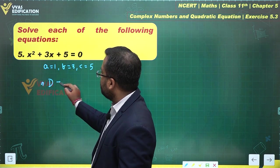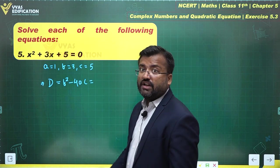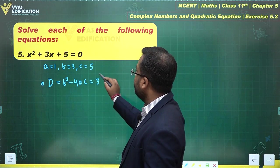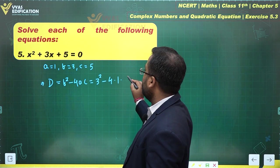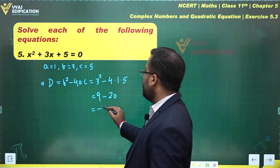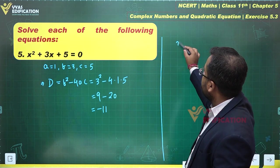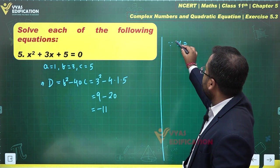Applying D equals b square minus 4ac, the discriminant equals what? Discriminant is b squared minus 4 times a times c. What is that? 9 minus 20, which is minus 11.